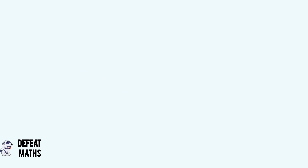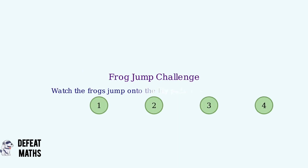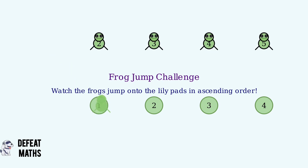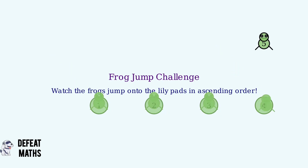Now let's move on to our next game. In this game, the frogs will jump onto the lily pads in ascending order. Watch as they jump: one, two, three, four, five. The frogs are all in order now.